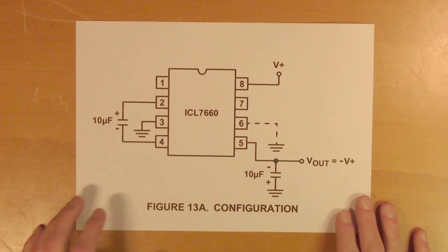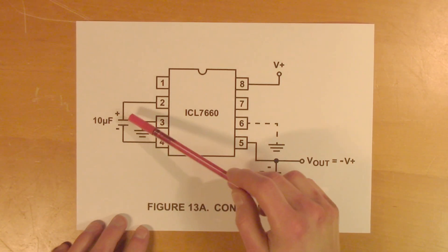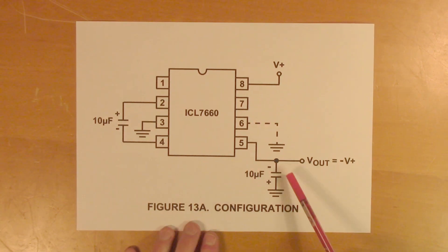This is what the IC looks like. And this is the capacitor in question. This is C1. And this is the output capacitor.